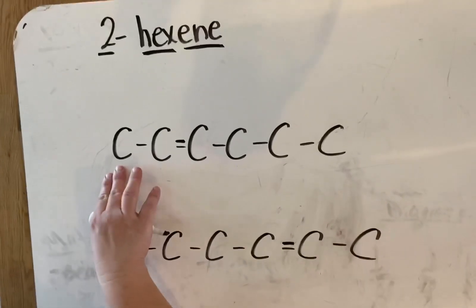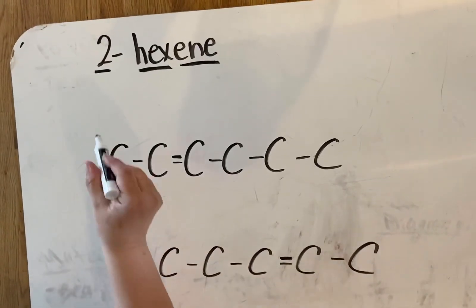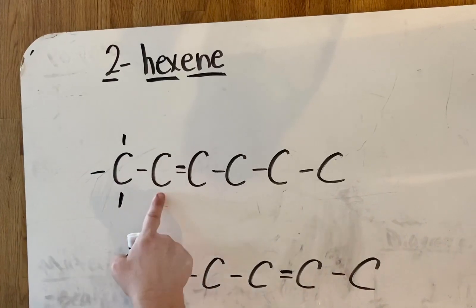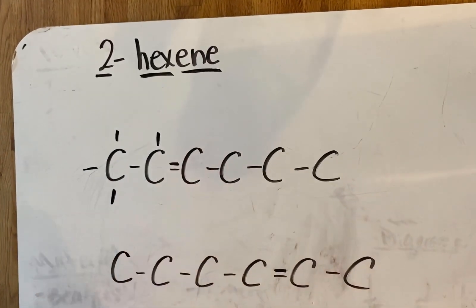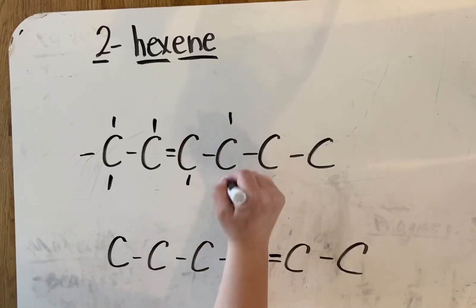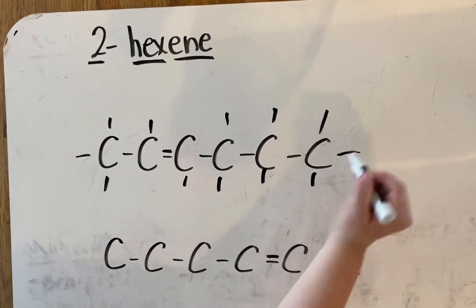But the other thing you could also look at is how many more does this carbon need. I'm not going to write all the H's in, I'm just going to show the lines, but H's would be there, there, and there. This guy only needs one more H, so I'd put him on top or the bottom. He needs one H. This would need two, this would need two, and this would need three.